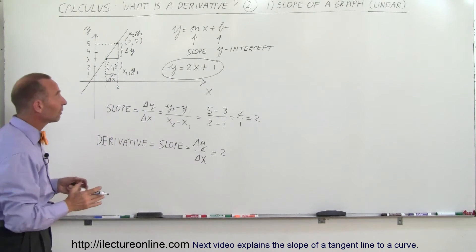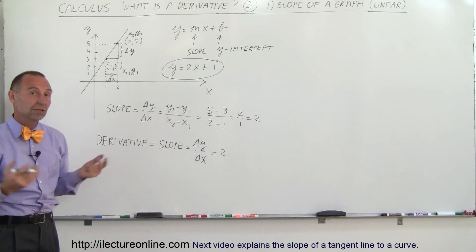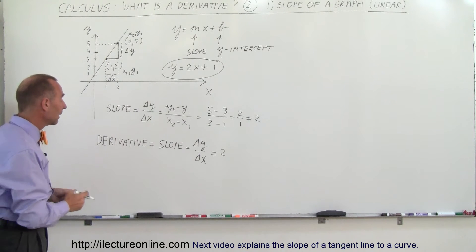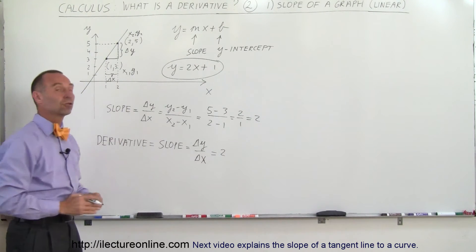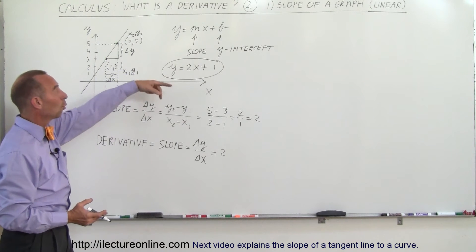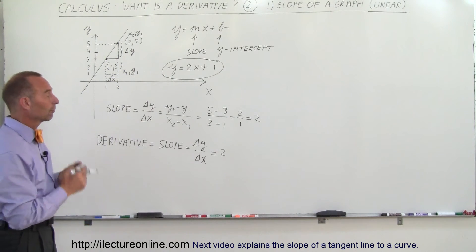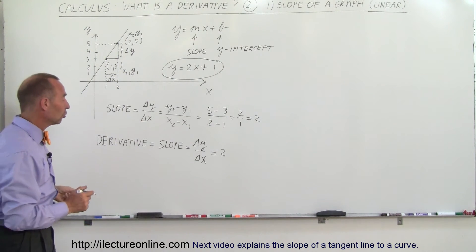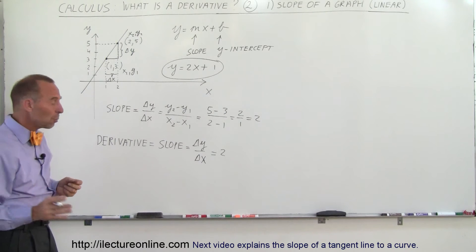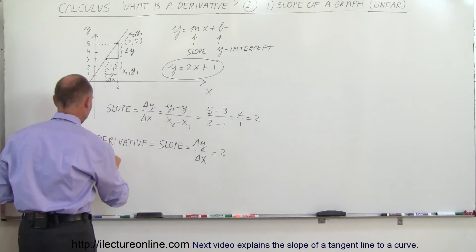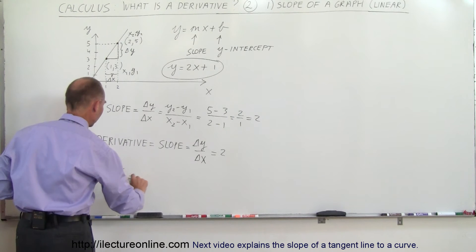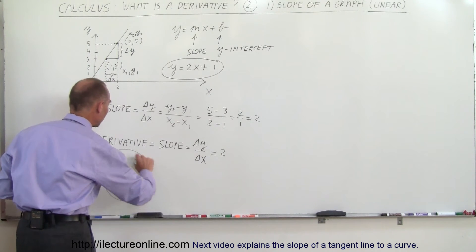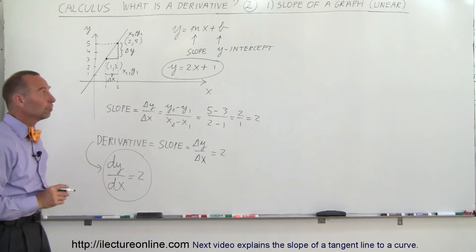For a straight line function in the form y equals mx plus b, the derivative is simply equal to the slope of the function — in this case m, or 2. One common way of writing the derivative is as dy/dx. So dy/dx for this particular function is equal to 2.